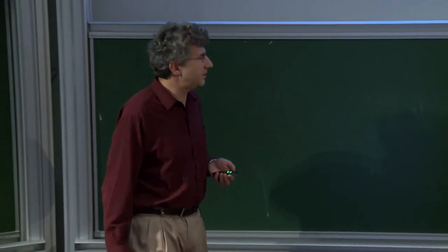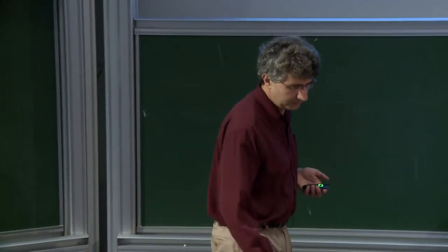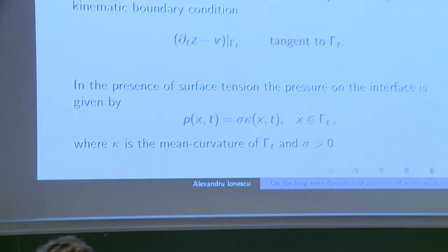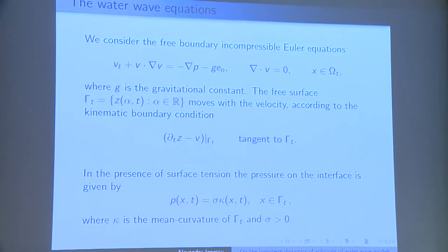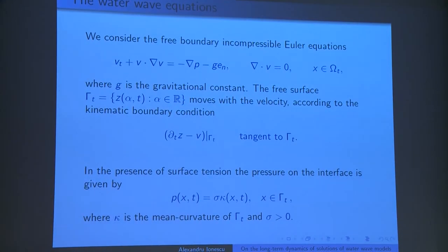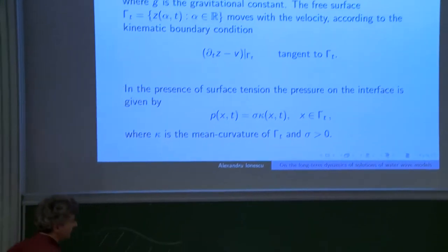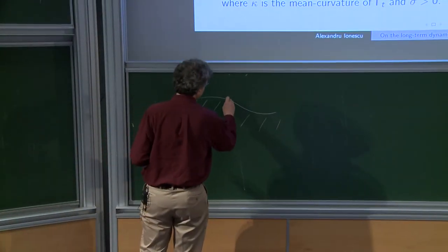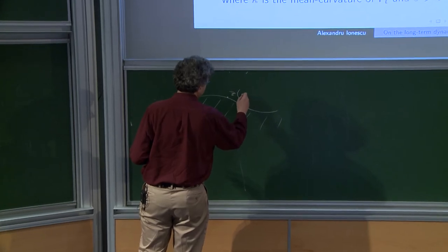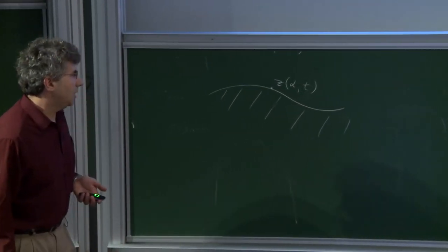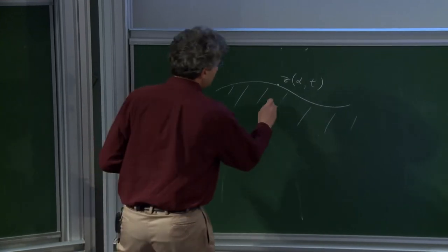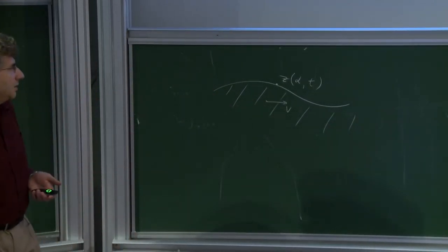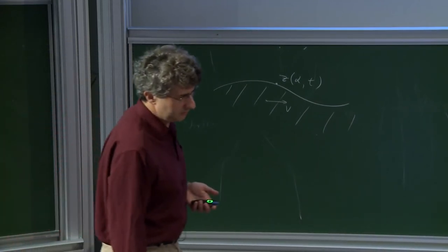At the simplest level, the model is simple to draw a picture. You have a fluid that presumably lives under an interface. The fluid is described by the interface, which is a moving surface Z of alpha and T. It's described by a velocity V, and we have equations.